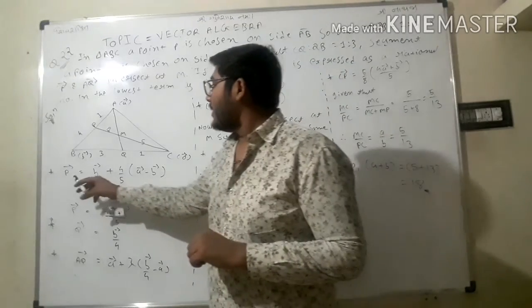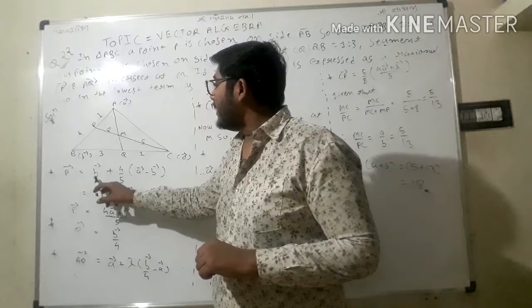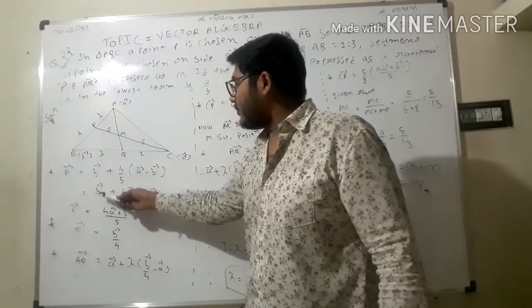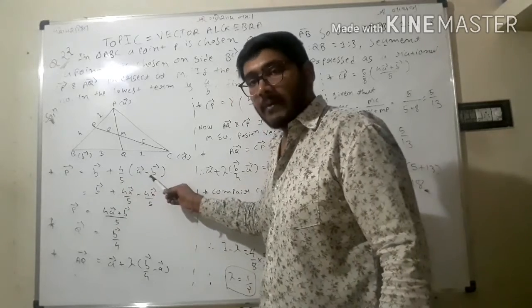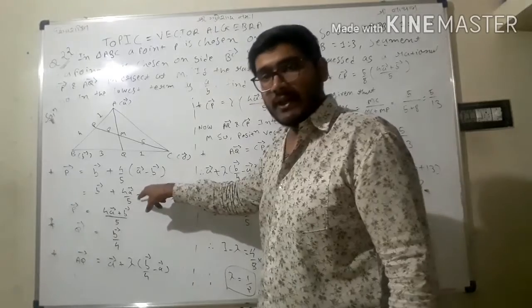Now I will get P vector equals b vector plus 4 upon 5 times (a vector minus b vector). After simplification, P vector equals (4a + b)/5.